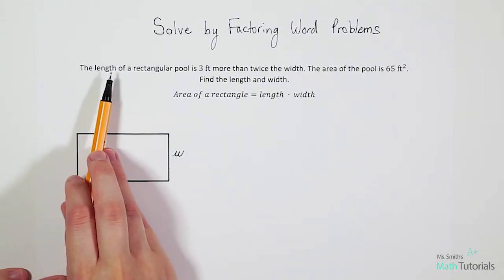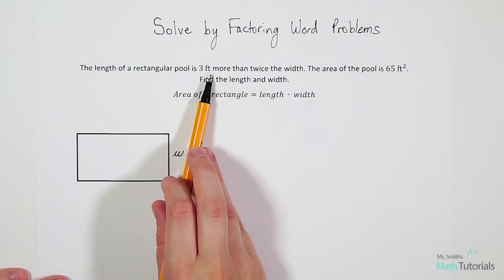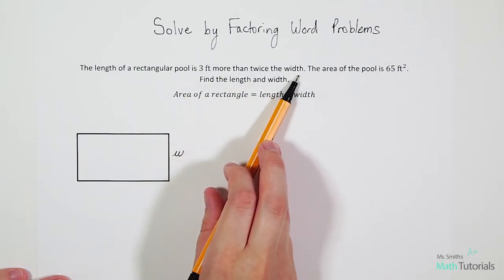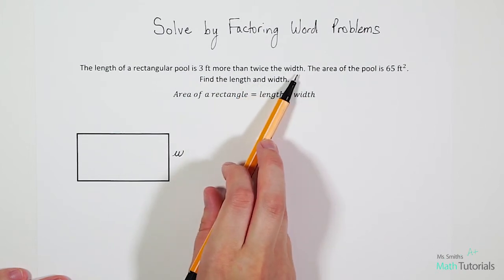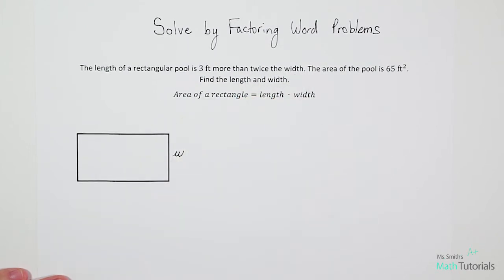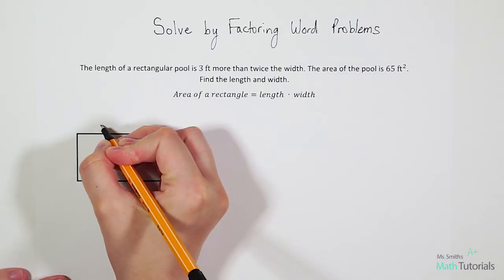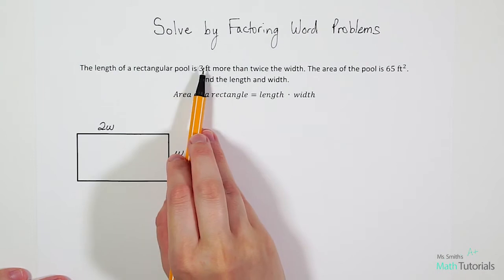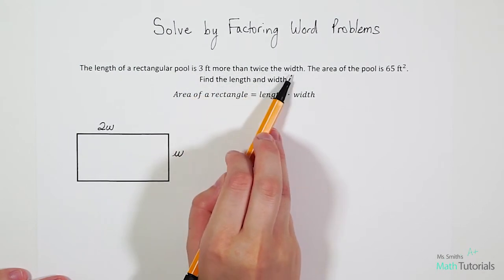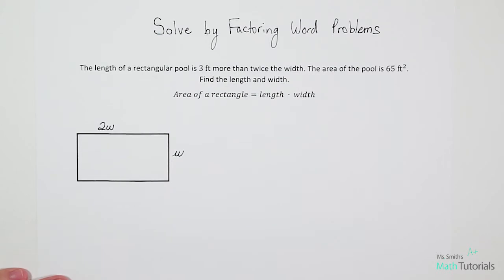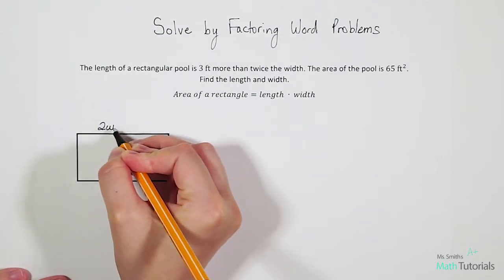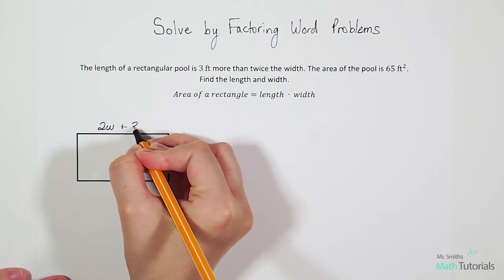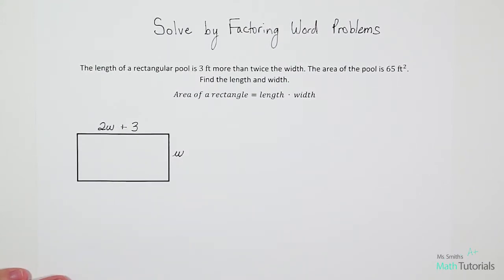Now let's think about the length. It says the length is three feet more than twice the width. Let's just focus on that twice the width. So if we're going to twice something, that means we're going to times by two. So we're going to take the width and we're going to double it. We're going to times it by two. So 2W, but then it says it's three feet more than twice the width. Well, more than indicates addition. So that means we're going to take our twice the width and we're going to add three to it. So three feet more than twice the width.